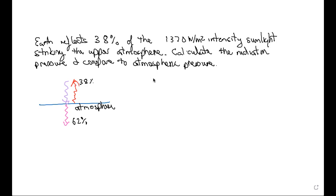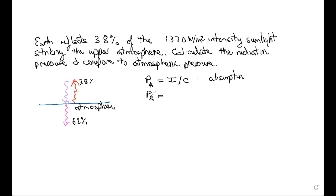When electromagnetic waves are absorbed, the radiation pressure — where 'a' is the subscript for absorbed — is related to the intensity of the incident light by this equation: it's just the intensity divided by the speed of light. When light is reflected, the reflected radiation pressure — where 'r' means reflected — is equal to twice the intensity divided by the speed of light.